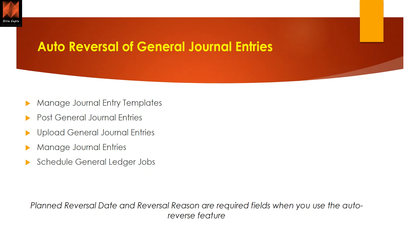The first topic is auto reversal of GL. If you plan to reverse accounting entries in a future period — especially for accruals as organizations typically do — SAP has now provided an option where the system will automatically reverse the journal entry. It's a five-step quick process. First, you manage templates: when you create a journal entry template, you select 'post general entries with auto reverse.' So in the template itself you have to select the auto reverse option. Then in post JEs you choose the default template and from the list create using a template that has auto reverse enabled.